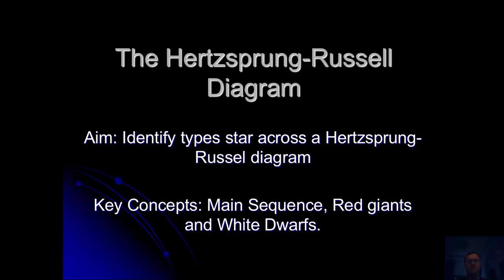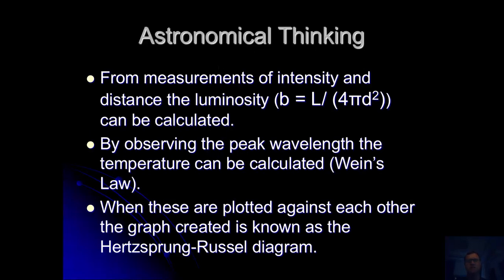So a bit of astrophysics thinking first. From the measurements of intensity and distance, the luminosity of a star can be calculated—that's how bright a star is. At the same time, by observing the peak wavelength and temperature, the temperature can be calculated using Wien's law. So if we have the brightness of the star and the temperature of a star and we plot these things together, we get something which is known as the Hertzsprung-Russell diagram.